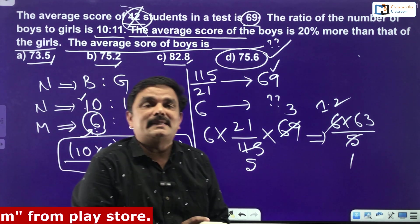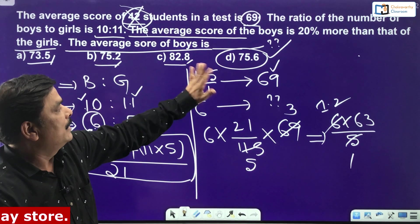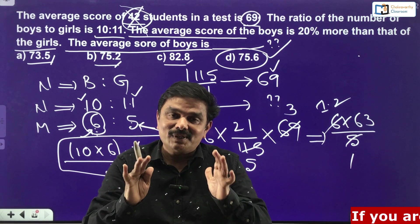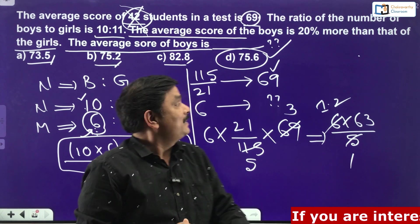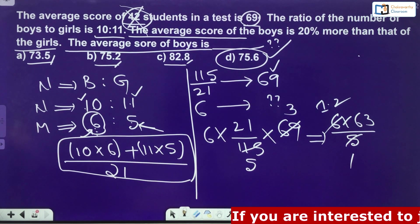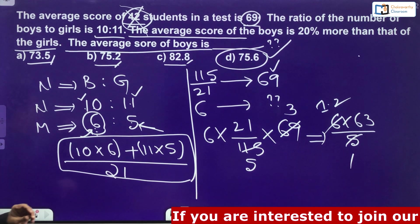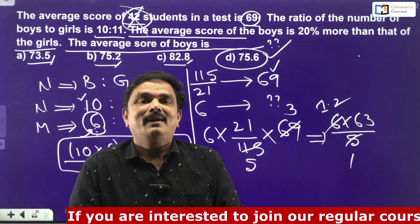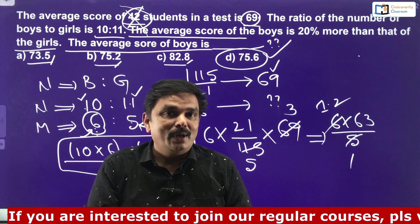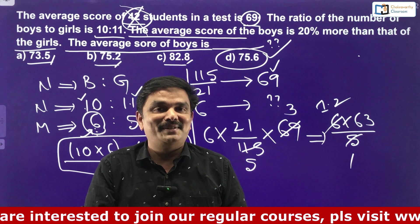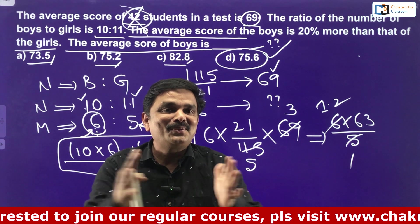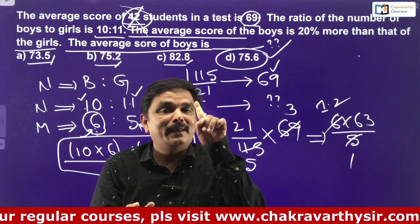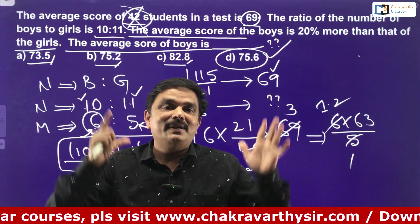So the answer is 75.6. To do this question with ease — almost in 2 or 3 steps — you must know the concept of ratios, concept of percentages, and concept of weighted average method. If you know all these three, this question is a cakewalk for you. Nowadays the examiner is very intelligent — they are combining 2 to 3 chapters together. Here you can see 3 chapters are combined: averages, ratios, and percentages, and within averages they have used the weighted average concept.